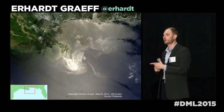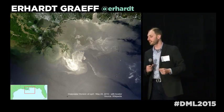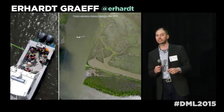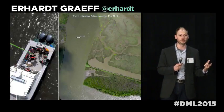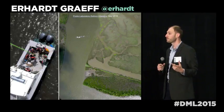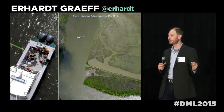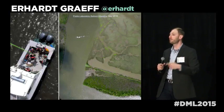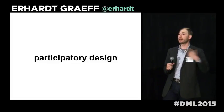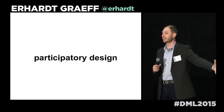A good reference for this is the work of Public Lab and what they've been doing with grassroots mapping. This is some imagery from the Deepwater oil spill off the Gulf of Mexico. They worked with community groups there to map the areas that were affected and really understand how we can take this technology and solve a real problem, build a community around it, and have a sense of ownership over it. That participatory civics aspect comes through a participatory design process.